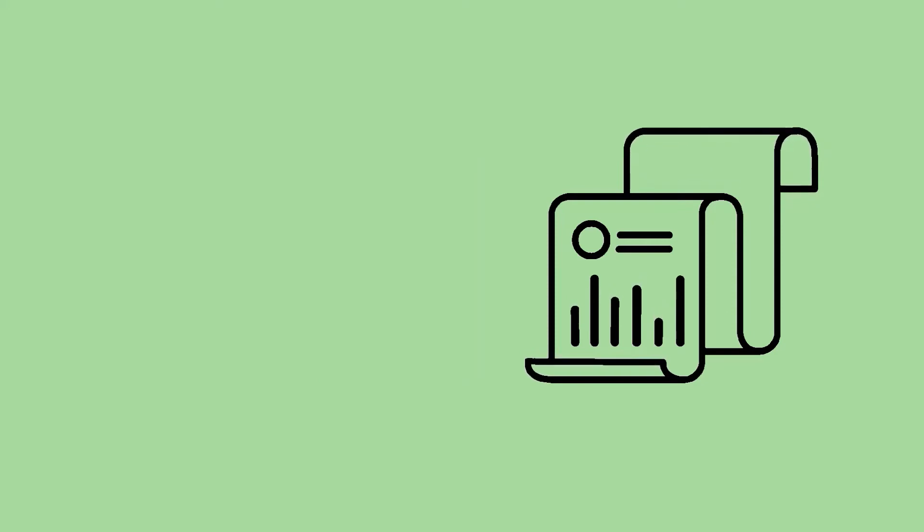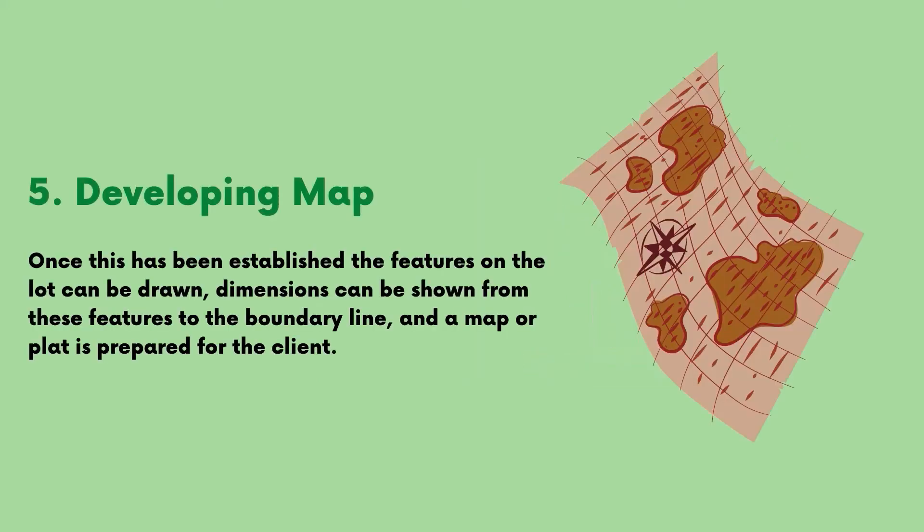Stage 5: Developing Map. Once this has been established, the features on the lot can be drawn, dimensions can be shown from these features to the boundary line, and a map or plot is prepared for the client.